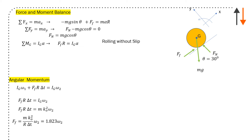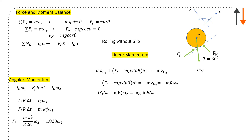In terms of angular momentum about point g, the only term causing a moment is friction, so force of friction times r times delta t equals Ig times omega 2, since the system starts at rest. Since Ig is given as a radius of gyration, it's m times k-naught squared. Substituting numerically, force of friction times r times delta t equals 1.82 times omega 2.